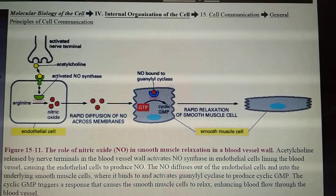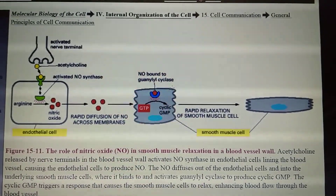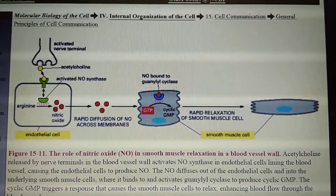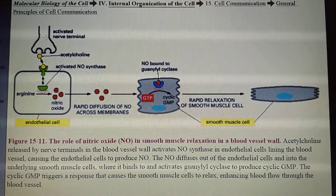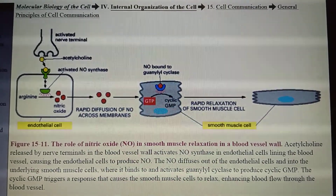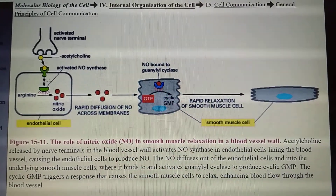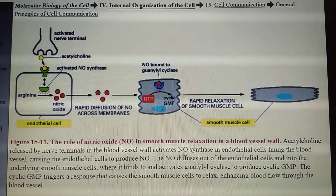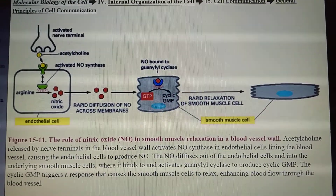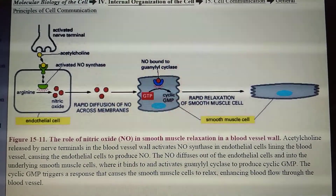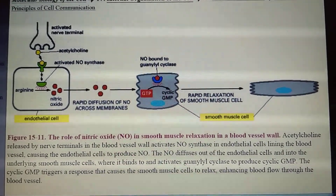Many types of nerve cells use NO signals — NO gas — to signal to their neighbors. This is the activated nerve terminal, which can release acetylcholine molecules. The endothelial cell possesses a receptor for acetylcholine. When the acetylcholine binds to the endothelial cell receptor,